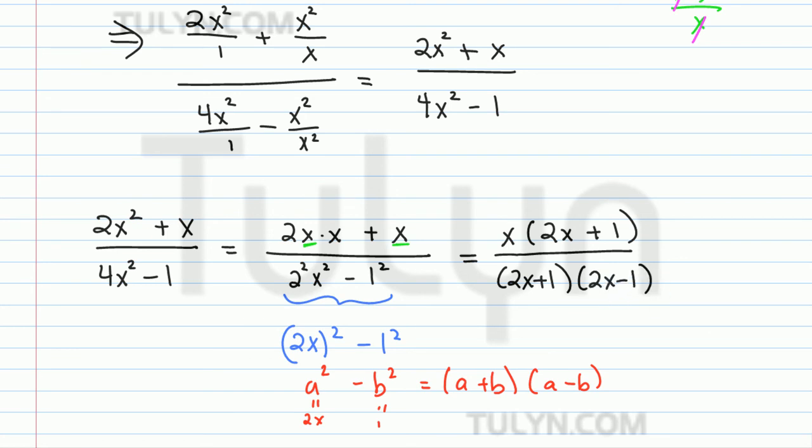And now canceling things out, there's a 2x plus 1 in the numerator and the denominator. So what's left over is just an x in the numerator and 2x minus 1 in the denominator. And now since there's nothing else we can do, we can't reduce any further, then this is the solution to the complex fraction given above.